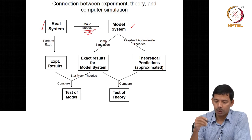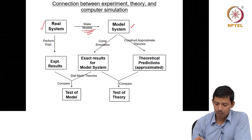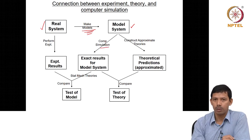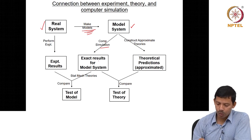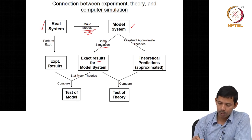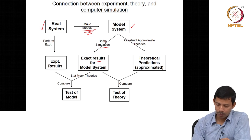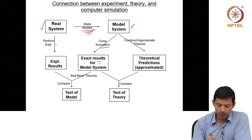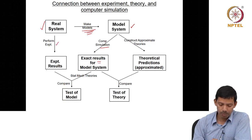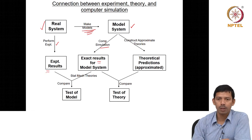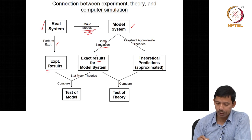Once you have the model system, you can perform a computer simulation on it and get the results — those are the results you obtain from computer simulation for the model system you have made. On the other hand, from the real system you perform an experiment and get the experimental results, which are the accurate results from experiments.